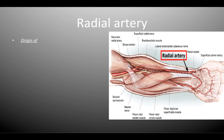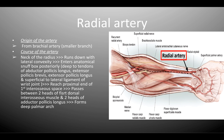Moving on to the radial artery, this is the smaller terminal branch of the brachial artery, given off at the neck of the radius. It runs down with a lateral convexity in the forearm and enters the anatomical snuff box posteriorly to reach the proximal end of the first interosseous space. It then passes between the two heads of the first dorsal interosseous muscle and the two heads of adductor pollicis, and finally forms the deep palmar arch.